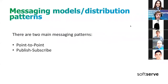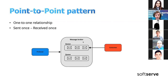For Message Brokers, there are typically two patterns: point-to-point and publish-subscribe. In the point-to-point pattern, there is one producer and one consumer. The Message Broker stores messages in queues. This is a one-to-one relationship — the pattern is 'sent once, received once.' When a producer sends a message, only one consumer receives it, and only once.